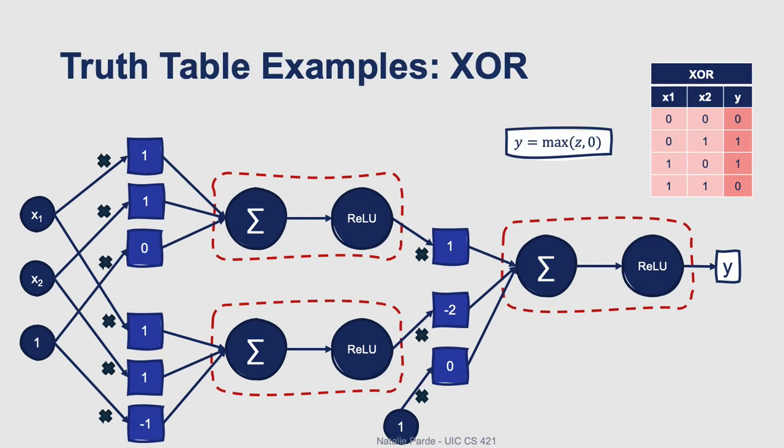We can work through a case from our XOR truth table to verify that this works. So in this case, let's assume that we've already learned optimal weights for our network, so we've learned that the inputs to hidden unit number one should be weighted by values of one, one, and zero. The inputs to hidden unit number two should be weighted by values of one, one, and negative one, and the inputs to the output unit number one should be weighted by values of one, negative two, and zero.